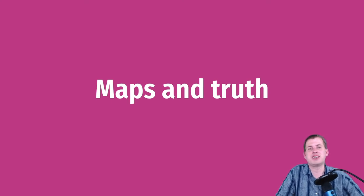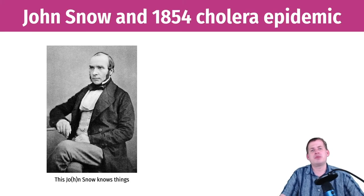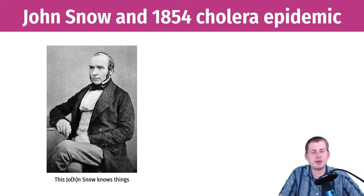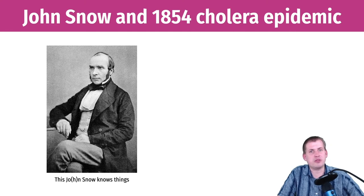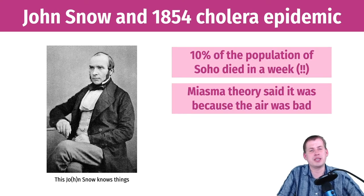To show the power of maps, there's this guy — an early epidemiologist named John Snow. He lived in London, and in 1854 in the neighborhood of Soho, there was a really fast-moving cholera epidemic — so fast-moving that it killed about 10% of the population of Soho in a week. Lots of other people were sick, and it looked like it was spreading to other areas of the city.